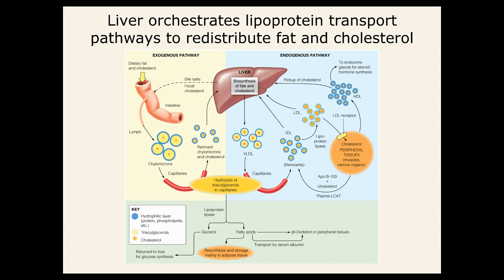This slide shows all the different pathways that go on with lipoproteins to redistribute fat and cholesterol. What we just looked at was dietary fat and cholesterol in the intestine using chylomicrons to take it through the bloodstream to adipose cells. Lipases are used to get it into the cell, and then triacylglycerols are resynthesized for storage.